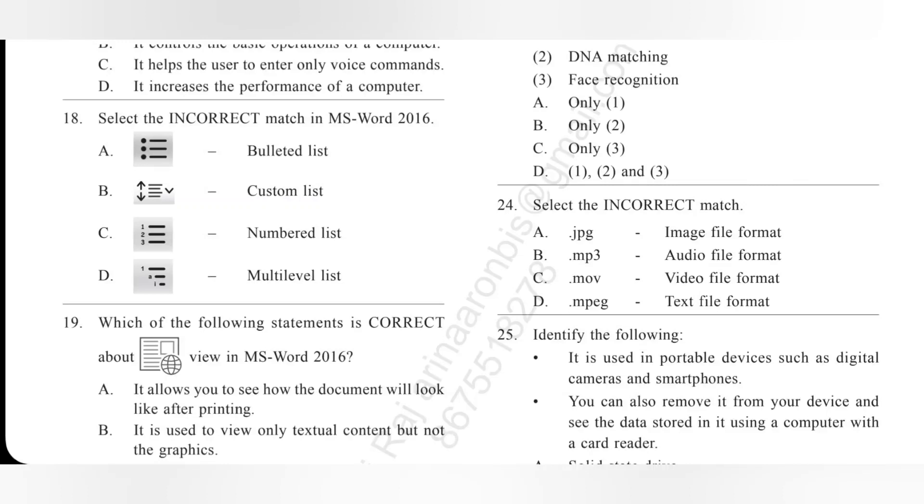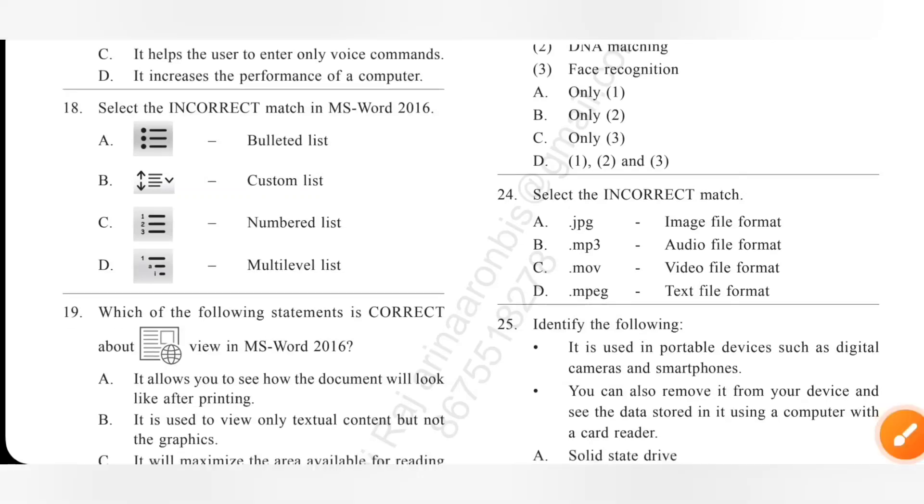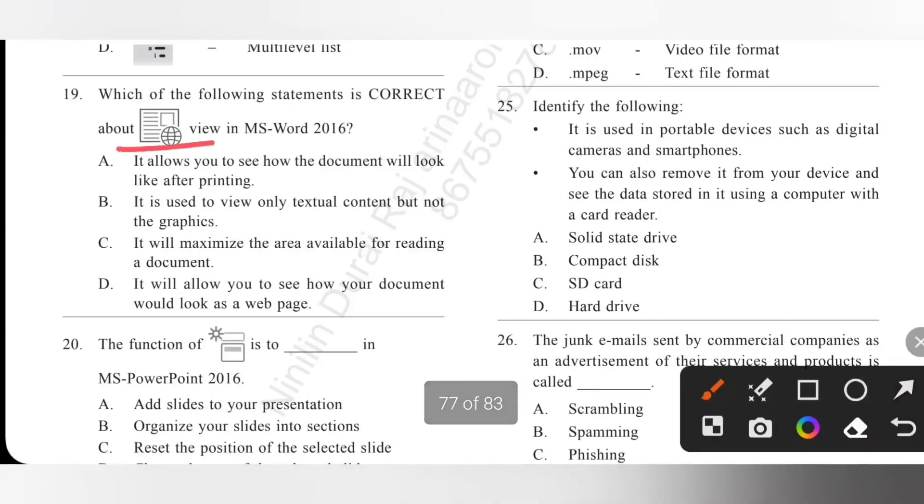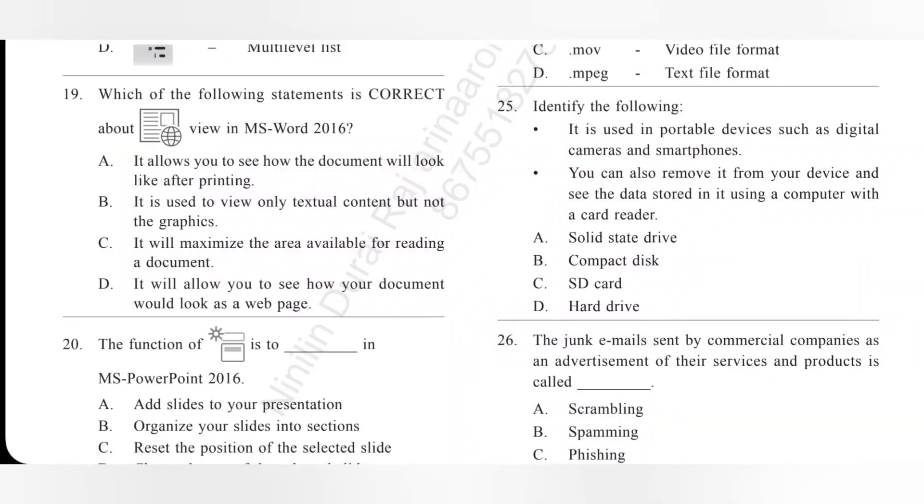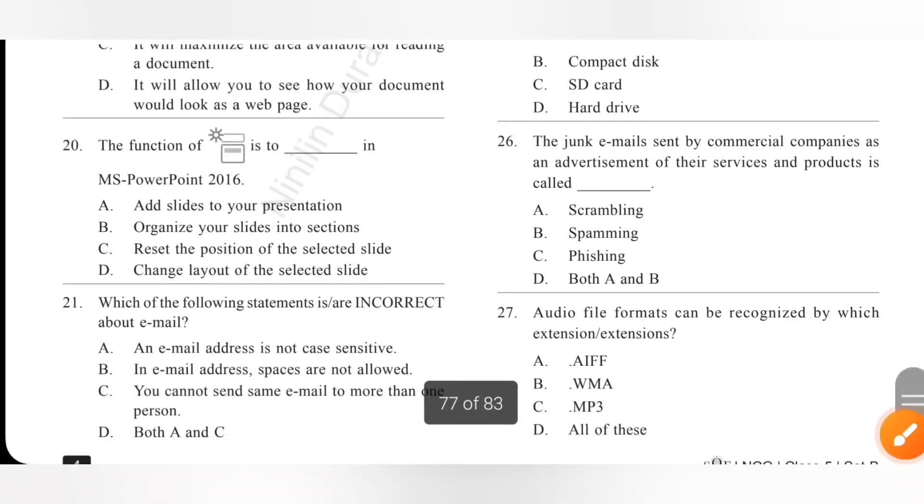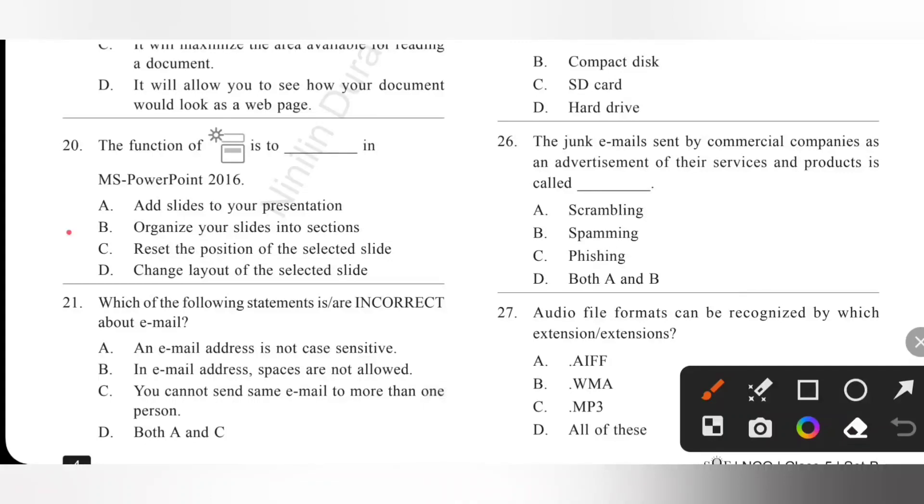Nineteenth, which of the following statements is correct about given views in MS Word 2016? This view will allow you to see how your document would look as a web page. Option D is the correct answer. Next 20, the function of given icon is to organize your slides into sections in MS PowerPoint 2016. Option B is the correct answer.